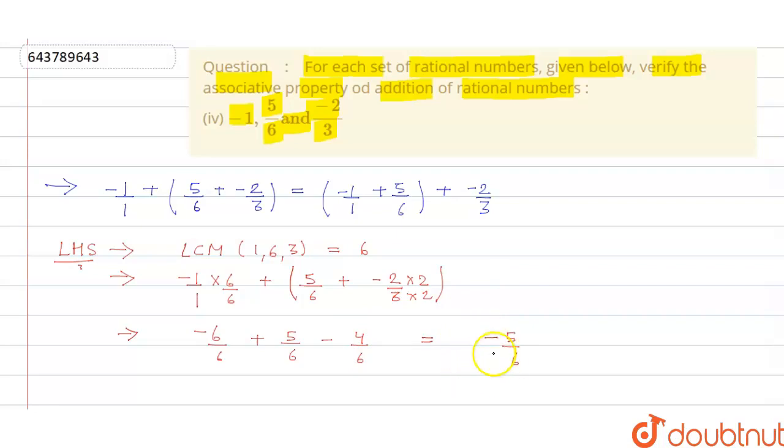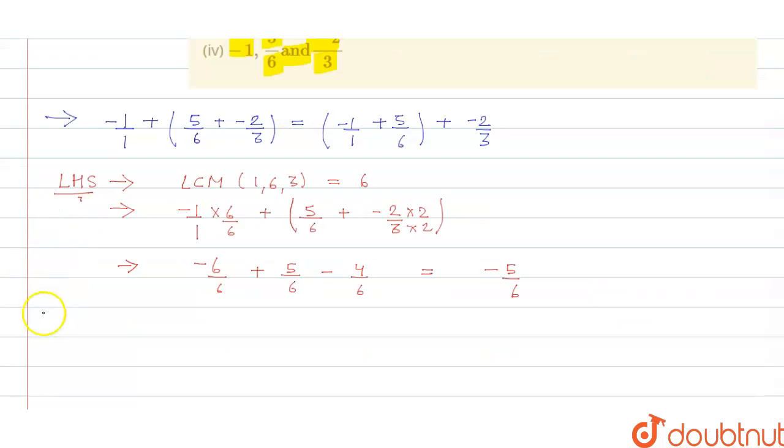Now we can take the RHS part. The RHS is equals to minus 1 by 1 gets multiplied by 6 plus 5 by 6 plus minus 2 by 3 gets multiplied by 2.